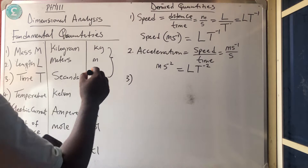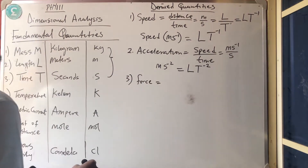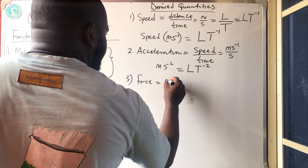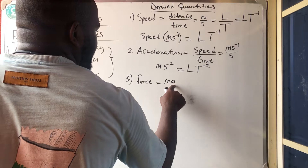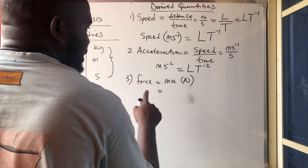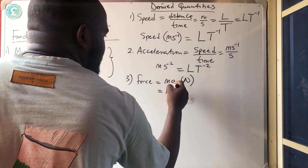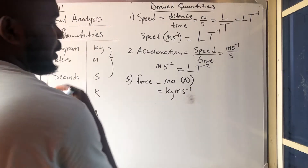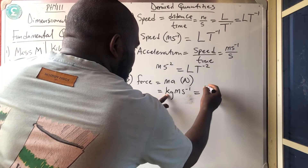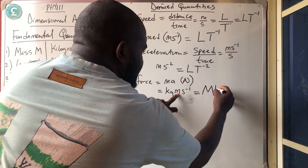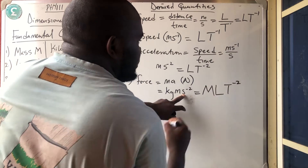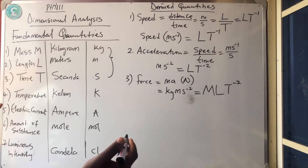Number 3 is force. Force equals mass times acceleration (F = MA). Mass is measured in kilogram and acceleration is measured in meter per second squared. So the SI unit of force is kilogram meter per second squared. The dimension: kilogram gives M, meter gives L, and second squared gives T⁻². So the dimension of force is MLT⁻².